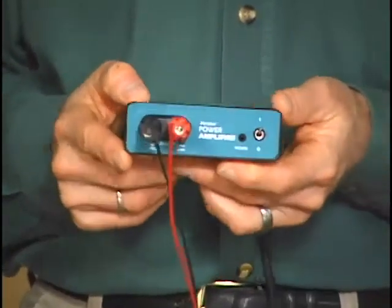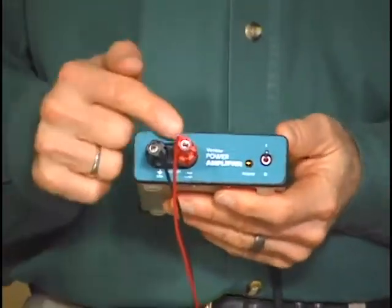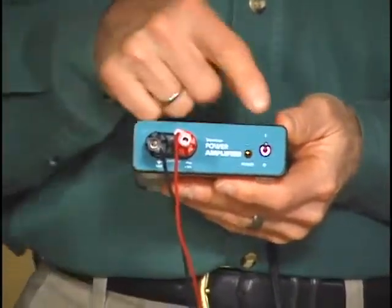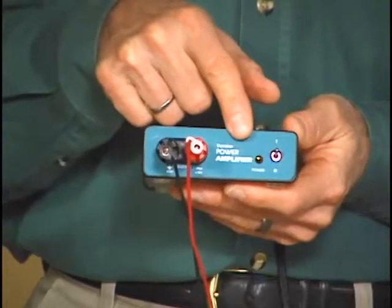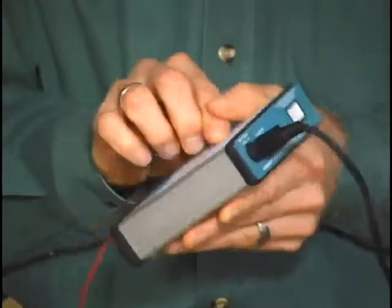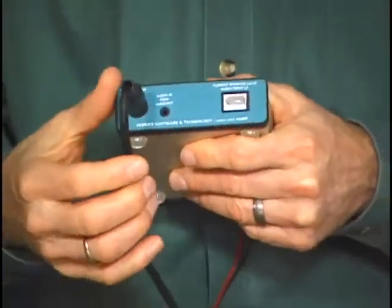I'll show you the connectors on the power amplifier. This is the output terminals where you would normally go to the device you're powering. This is the on-off switch, LED for indicating power on and on the back we have a couple important connections. This is the power to the power amplifier.